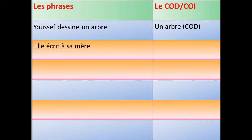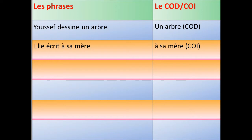Dans la deuxième phrase : elle écrit à sa mère. Elle écrit à qui ? Elle écrit à sa mère. Donc, « à sa mère », c'est un complément d'objet indirect.